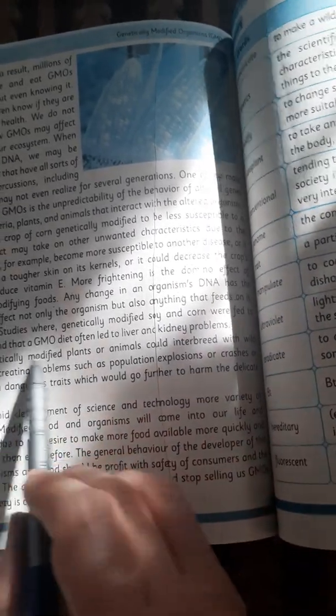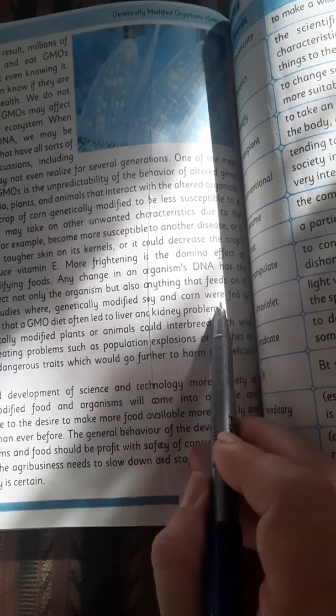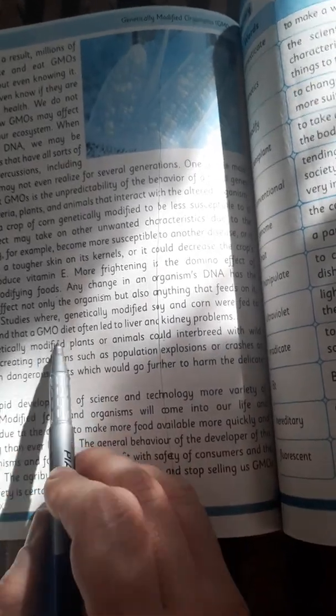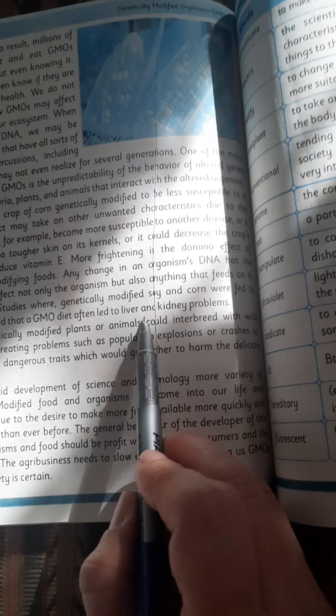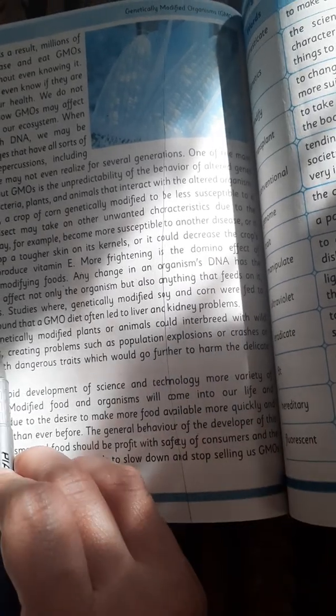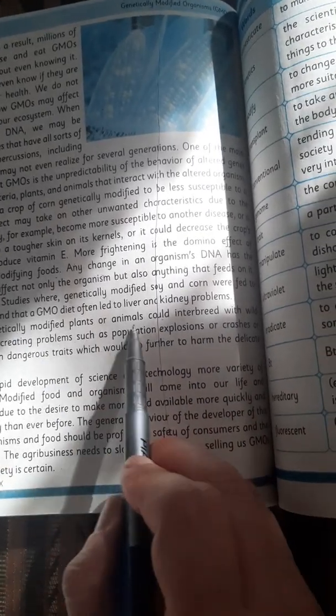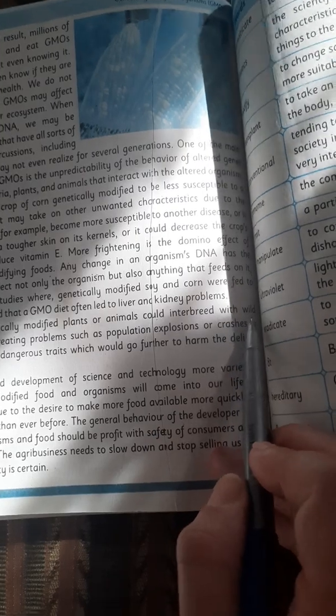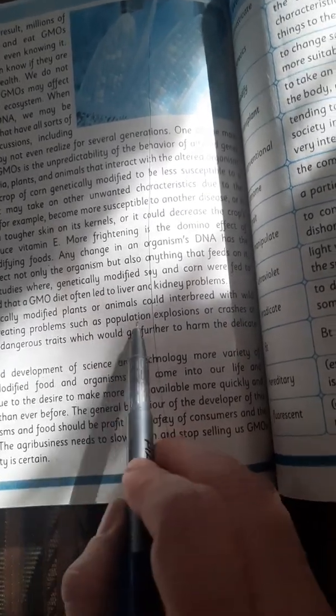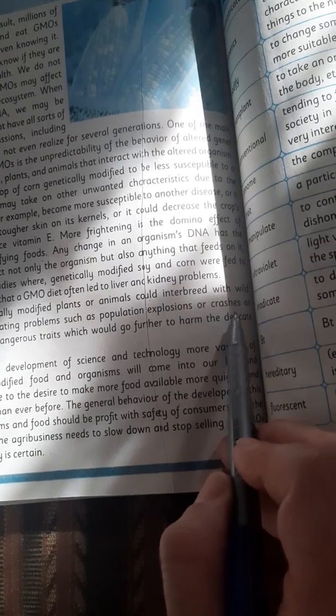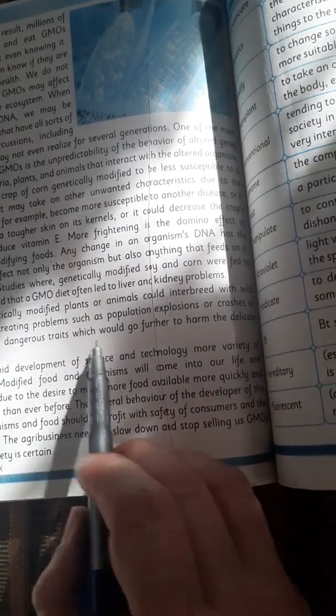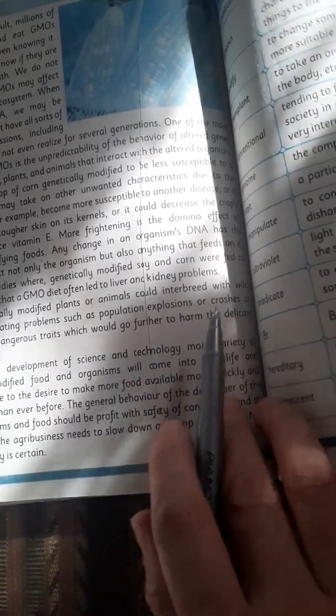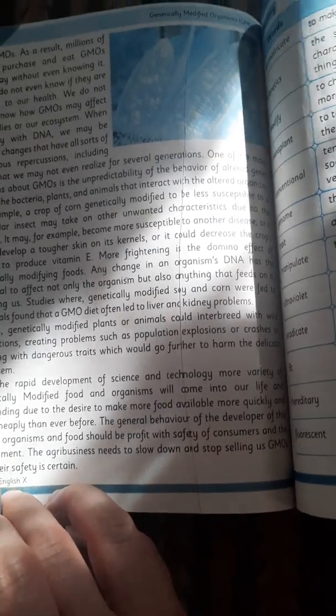Any change in an organism's DNA has the potential to affect not only the organism but also anything that feeds on it, including us. Studies where genetically modified soya and corn were fed to mammals found that a GMO diet often led to liver and kidney problems. Further, genetically modified plants and animals could interbreed with wild populations, creating problems such as population explosions or crashes, or offspring with dangerous traits which could go further to harm the delicate ecosystem.